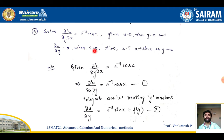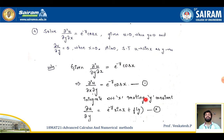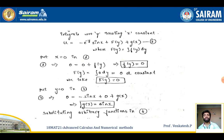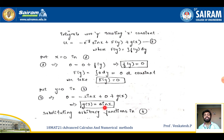Now applying the initial conditions: replacing ∂u/∂y = 0 when x = 0 gives f(y) = 0, so F(y) = 0. Next, replacing u = 0 when y = 0, along with F(y) = 0, gives g(x) = sinx.